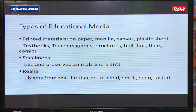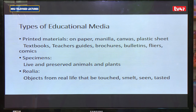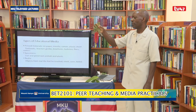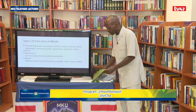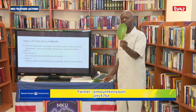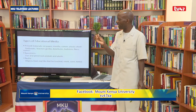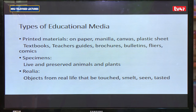The second category is specimens, which includes live and preserved animals and plants — very useful especially in biology and agriculture. For example, a flower from a bottlebrush plant, or simple and compound leaves, are live specimens. You can also obtain preserved specimens from a herbarium or museum.